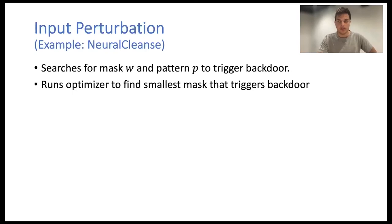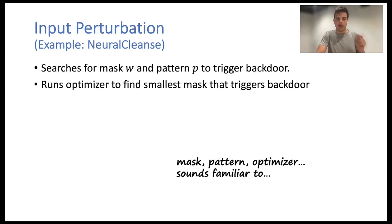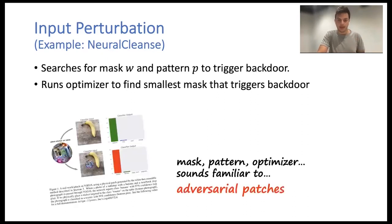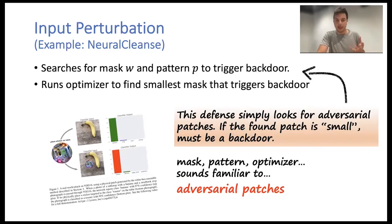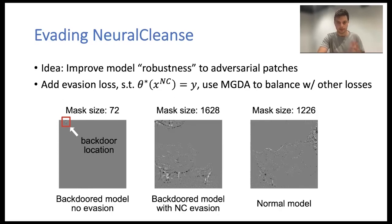We first focus on a famous defense that uses input perturbation, like Neural Cleanse. It searches for a certain mask and pattern that, when applied to the image, triggers backdoor behavior, running an optimizer to find the smallest backdoor. This sounds really familiar to adversarial patches — they also try to find a small mask. So this defense essentially just looks for adversarial patches that are very small and assumes that's a backdoor. Our counter is to simply make the model more robust to adversarial patches by adding a special loss, so the defense cannot find the small adversarial patch.